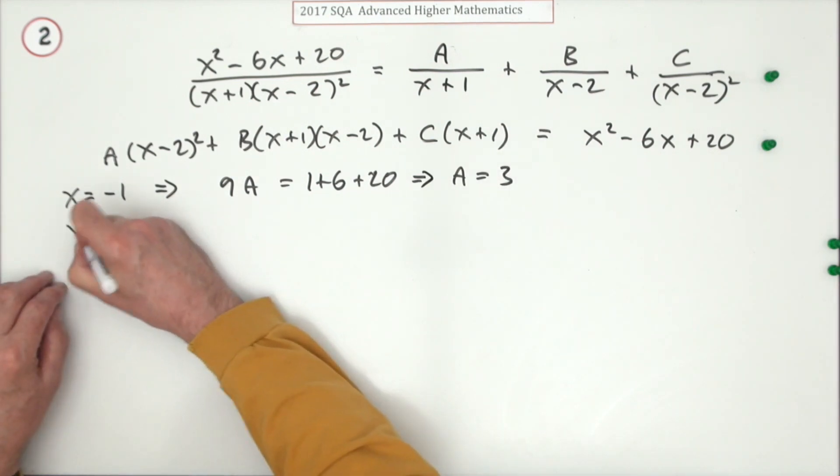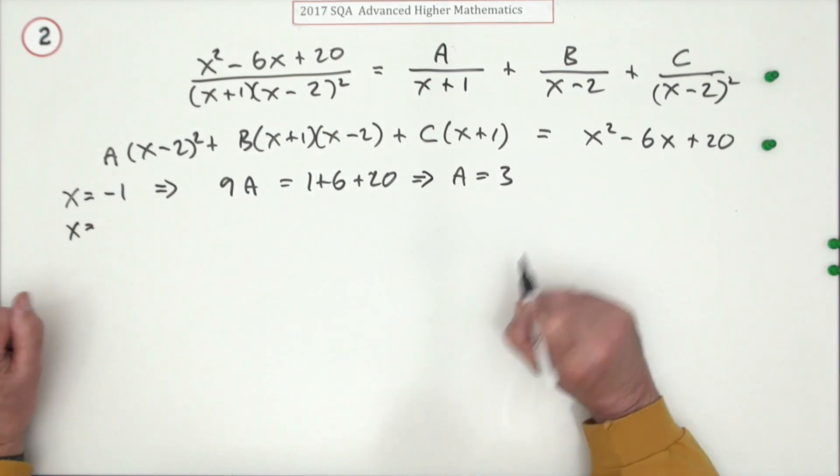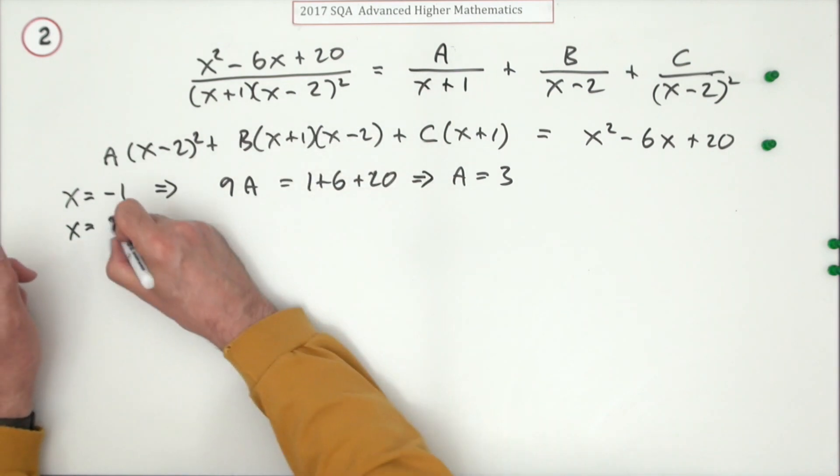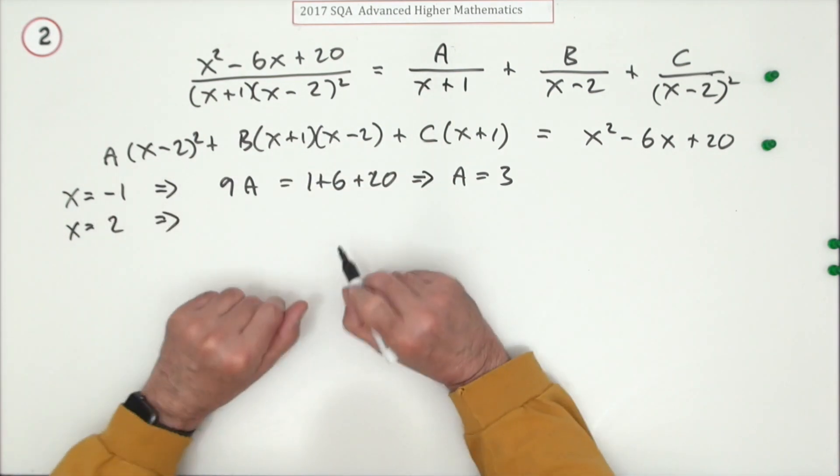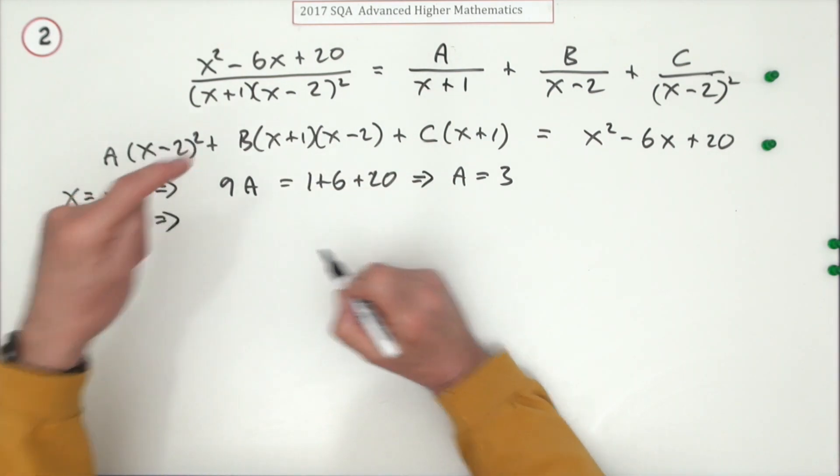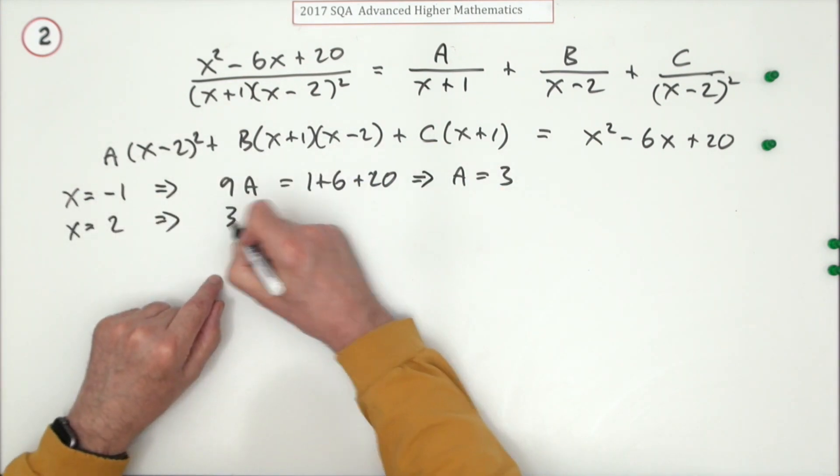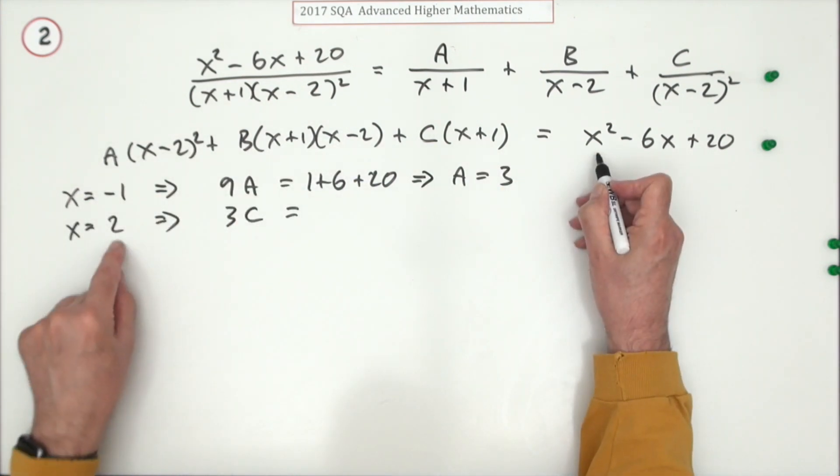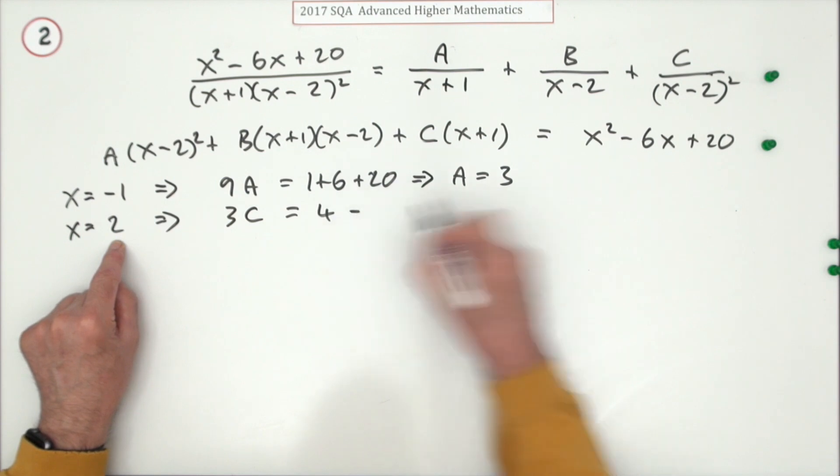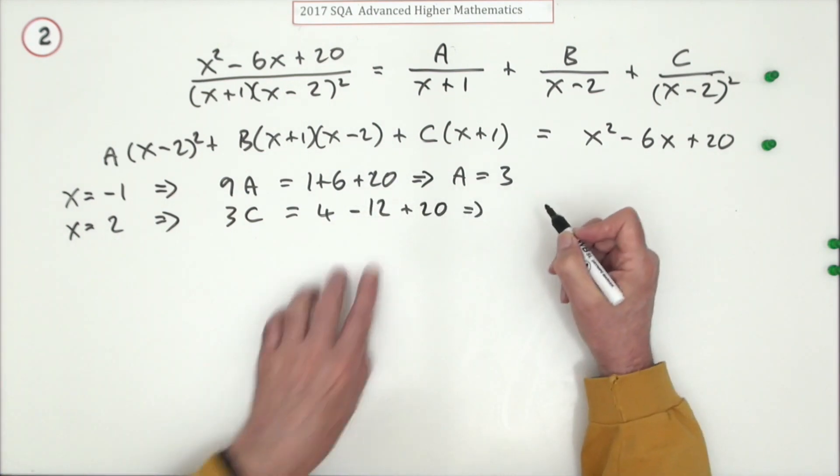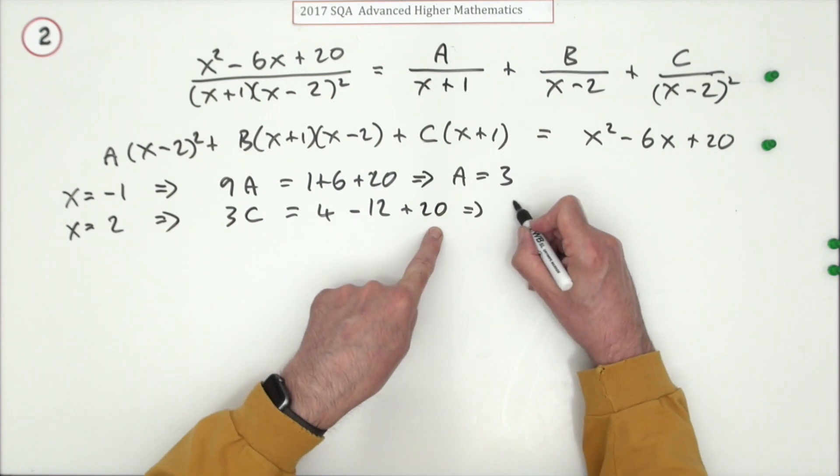Then again, I'll have x equals two, knocking out this one and this one, leaving me three C is equal to - that's going to be four minus twelve plus twenty, so that's going to be twelve. So C is, divide by three, four.